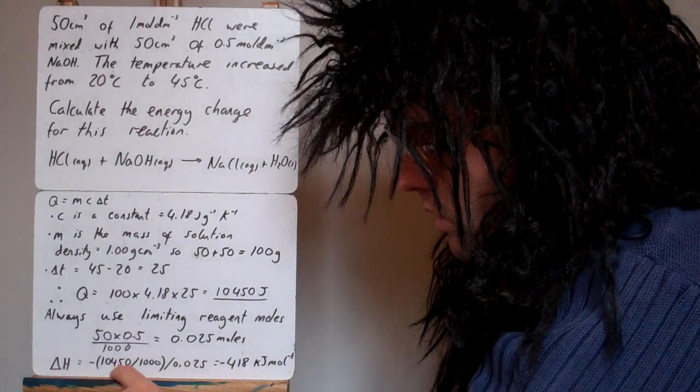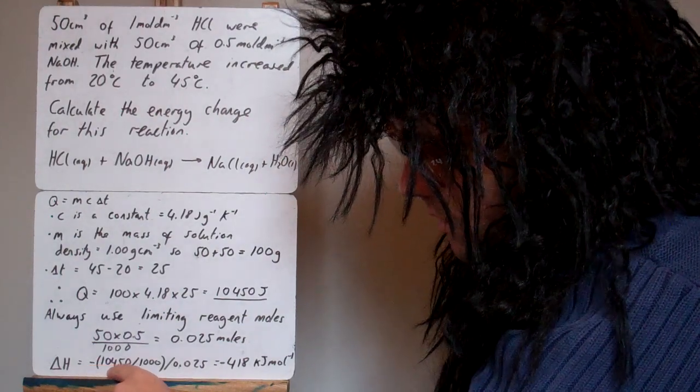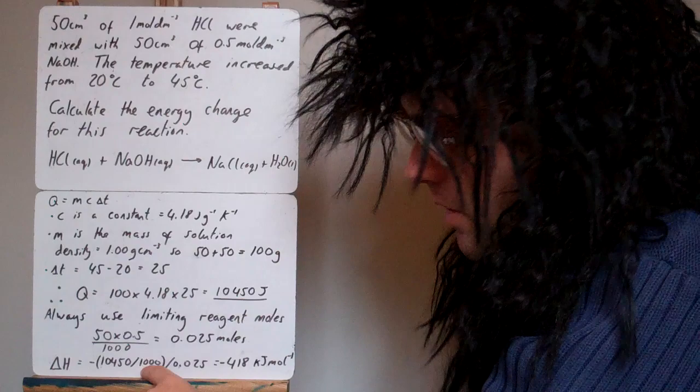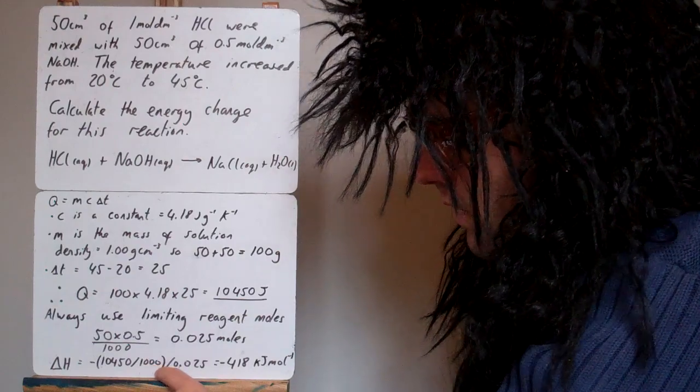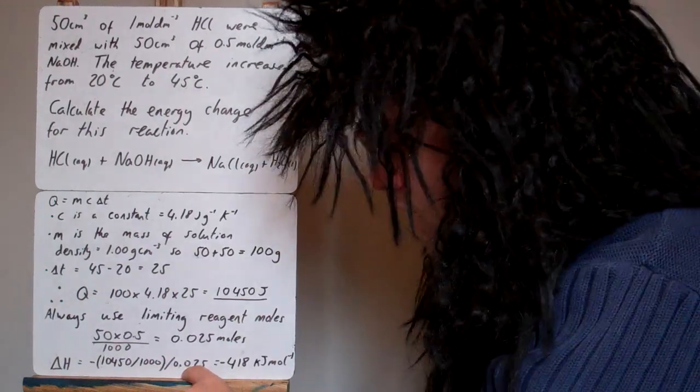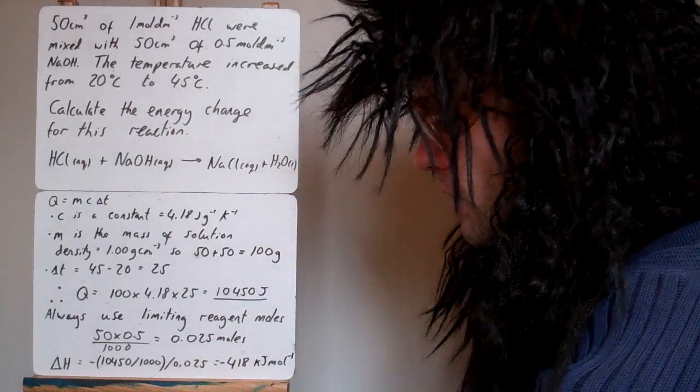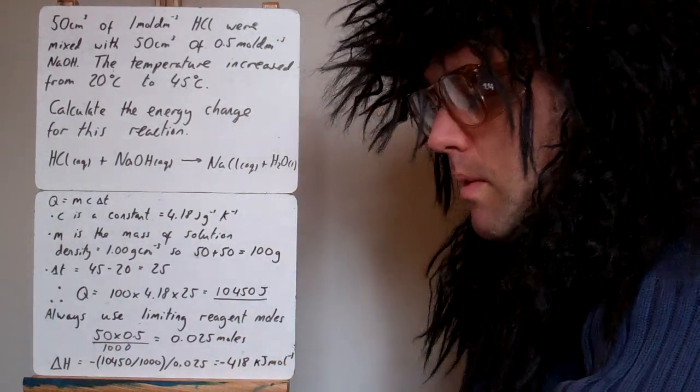Okay, so we do the minus sign, then the value we've got for Q, divided by 1,000, because we want to put it into kilojoules, and divide by the number of moles, the limiting reagent, and that gives us our value there, minus 418 kilojoules per mole.